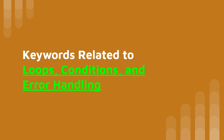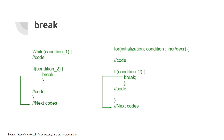Now let's go to keywords related to loops, conditions, and error handling. The first is 'break'. Break is a keyword used when you want to jump out of a loop. For example, in a while loop, when a condition is met you have a break, which takes execution to the line after the loop — outside of the while loop.